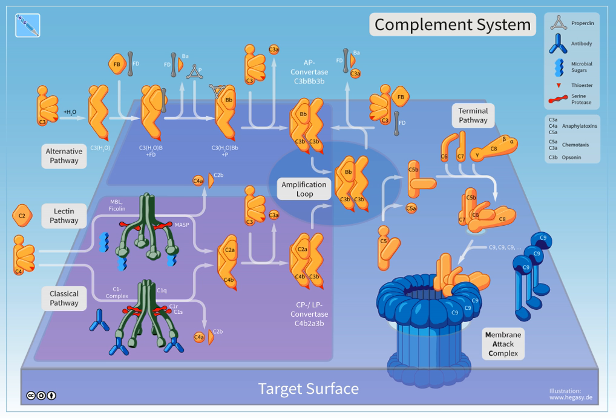C5B initiates the membrane attack pathway, which results in the membrane attack complex, consisting of C5B, C6, C7, C8, and polymeric C9. MAC is the cytolytic end product of the complement cascade. It forms a transmembrane channel, which causes osmotic lysis of the target cell.